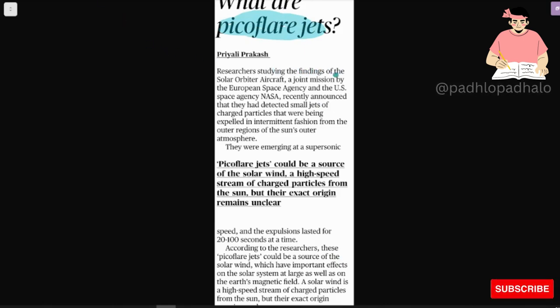Researchers studying the findings on the solar orbiter spacecraft, a joint mission by European Space Agency and the US Space Agency NASA, recently announced that they had detected small jets of charged particles that were being expelled in intermittent fashion from the outer region of the sun's outer atmosphere. They were emerging at supersonic speed and the explosion lasted for 20 to 100 seconds at a time.